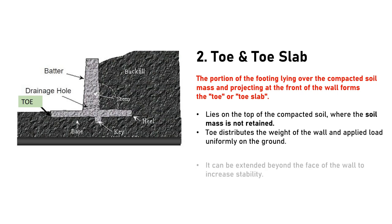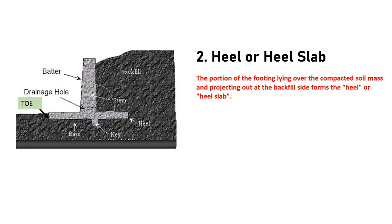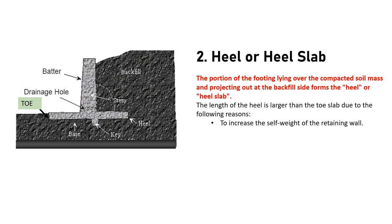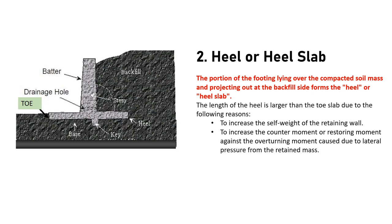Number 3 is the heel or heel slab. The portion of the footing lying over the compacted soil mass and projecting out at the backfill side forms the heel or heel slab. It lies on top of the compacted soil where the soil mass is retained. The length of the heel is always larger than the toe slab. A longer heel increases the self-weight of the retaining wall, imposing a gravity load on the base footing which increases structural stability. It also increases the counter moment or restoring moment against the overturning moment caused by the lateral pressure from the retained backfill.